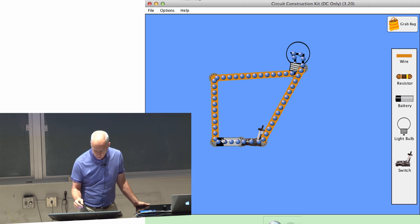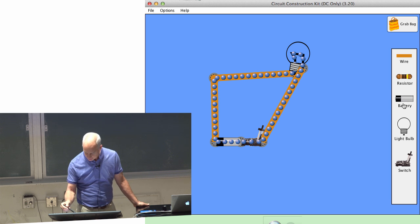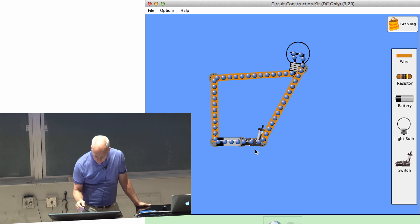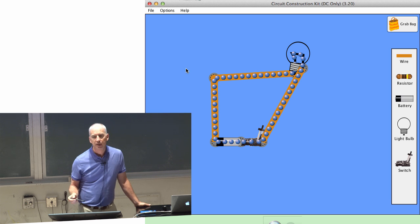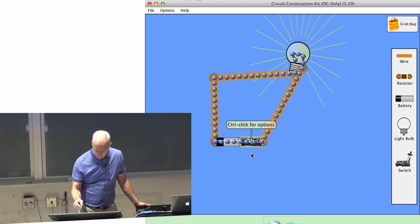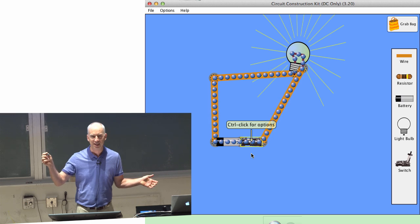But what happens if I close this switch? Because this battery is trying to push electrons. The positive side of the battery is the side with the little bump on it. So that's the positive side on the left. The negative side is trying to push electrons out. But if this isn't connected, there's no way for them to go. Watch the light bulb when I flip the switch. Because it lights.